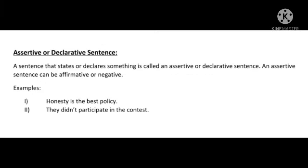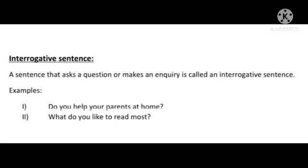Assertive sentences are also known as declarative sentences or statements. A sentence that states or declares something is called an assertive or declarative sentence. An assertive sentence can be affirmative or negative. For example: 'Honesty is the best policy.' 'They didn't participate in the contest.'